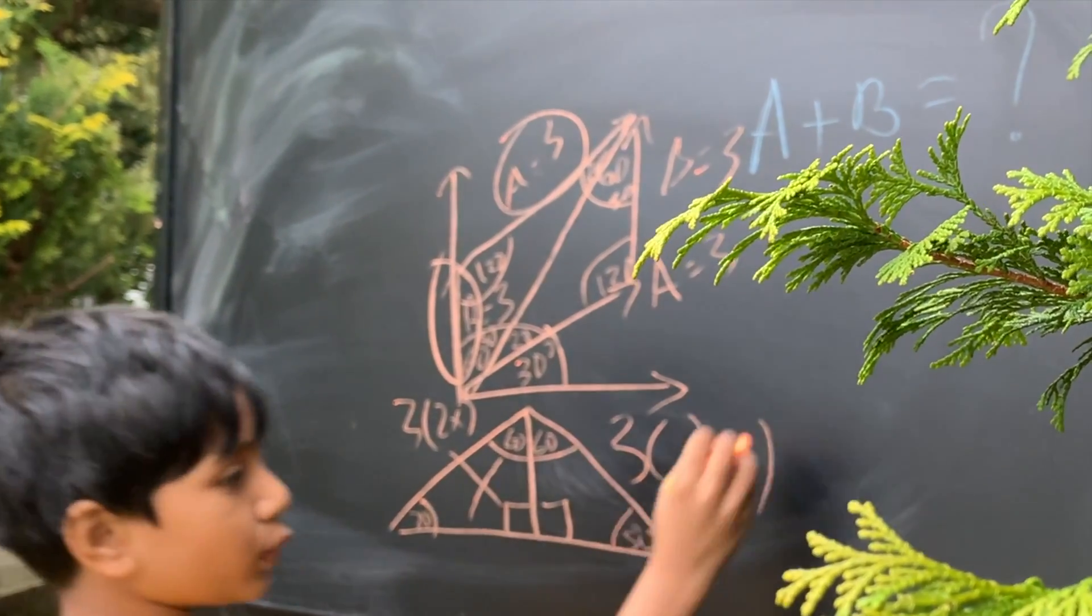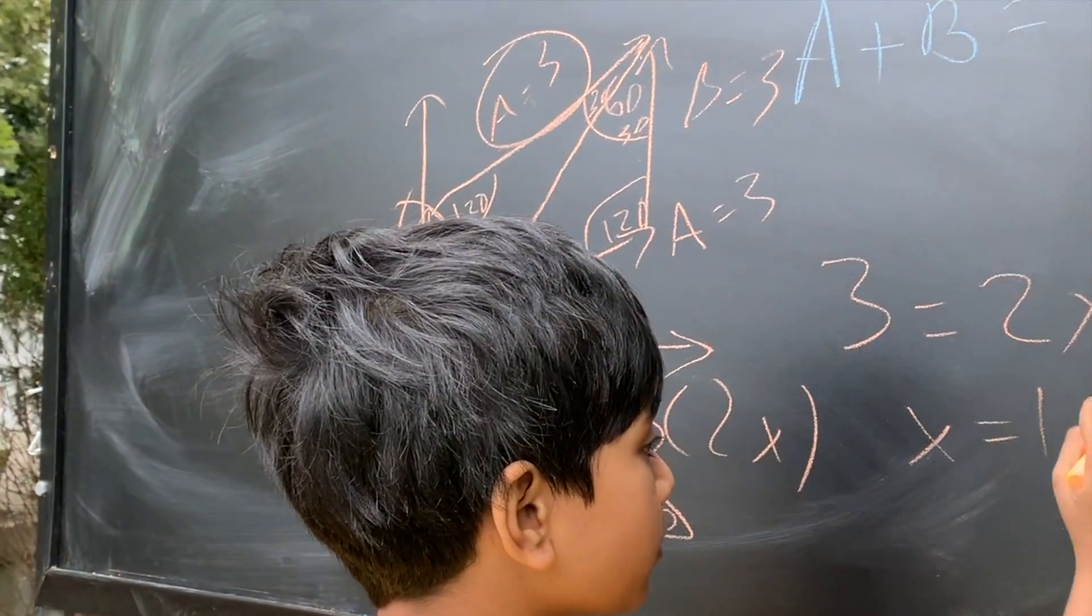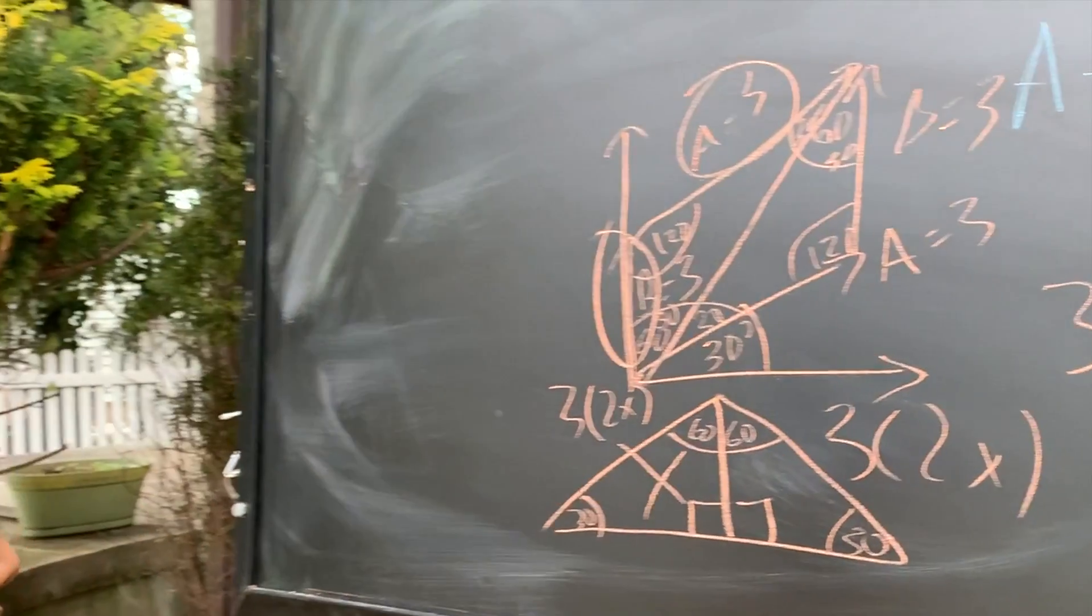So, that means if 3 is 2x, then we divide both sides by 2, giving us x equals 1.5.